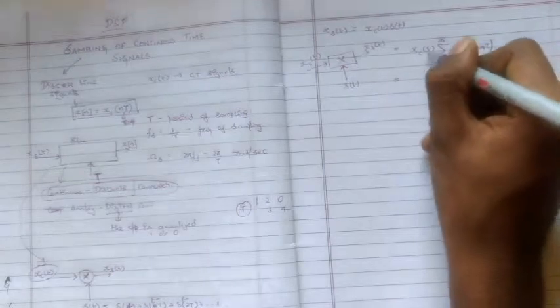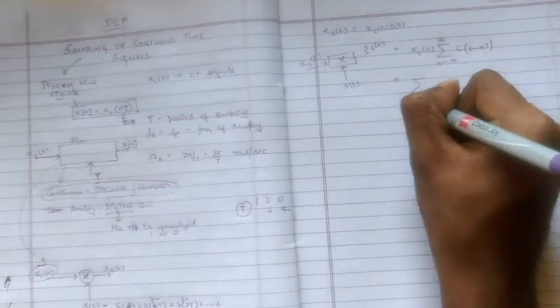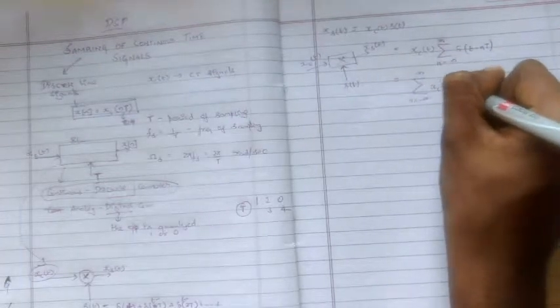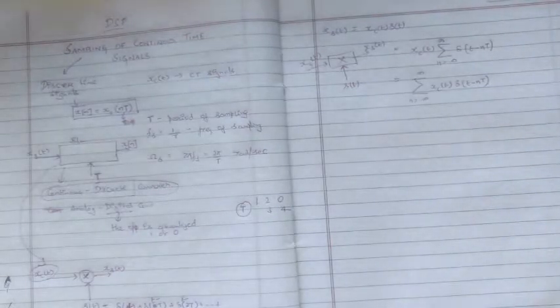And xc of t into s of t was a summation n equal to minus infinity to infinity delta of t minus nT. And since there's no n over here, we can take it into the summation n equal to minus infinity to infinity xc of t into delta of t minus nT.